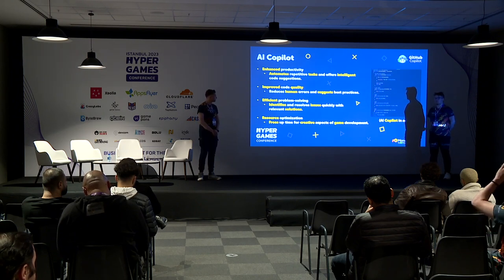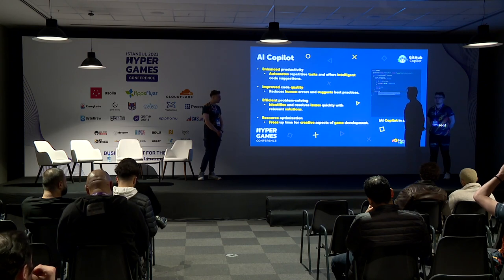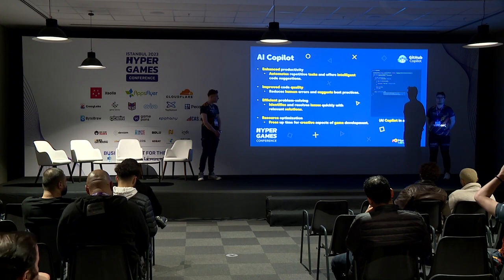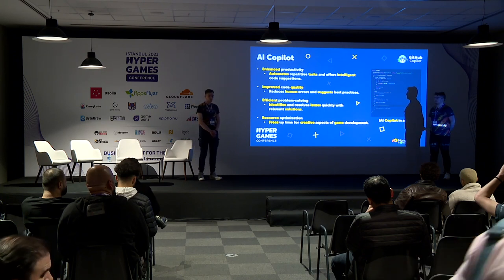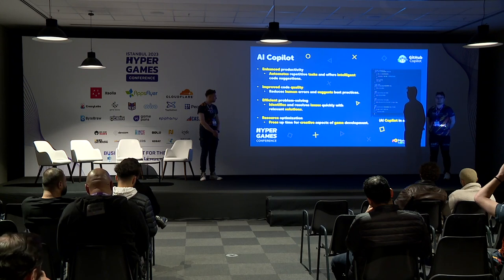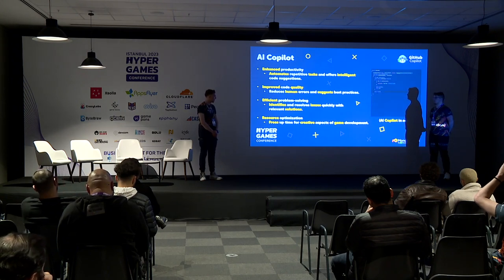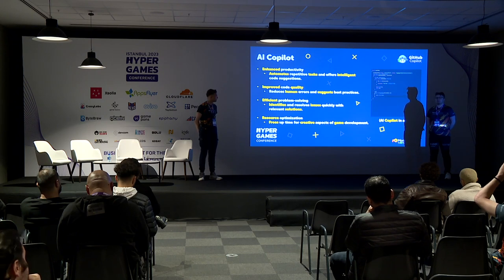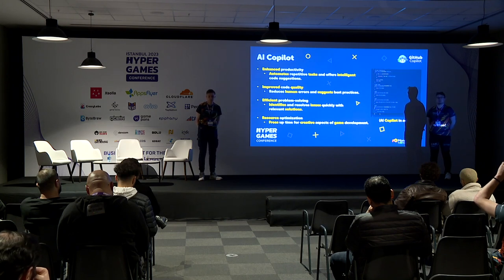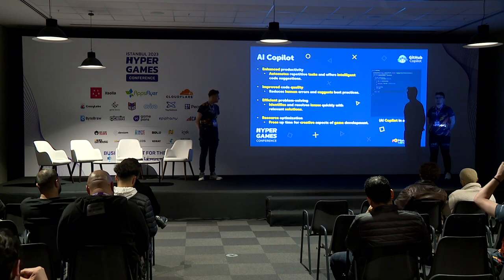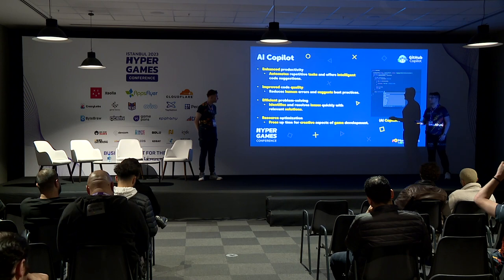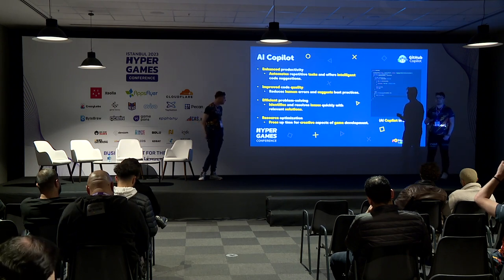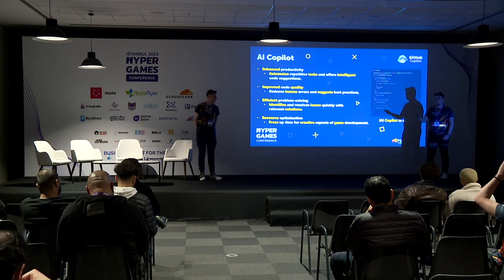About code quality: it uses the database of all code on the internet and trains on the best code found on GitHub, which is a Microsoft project with all repositories. So by default, it uses the best code practices available. For efficient problem solving, even a beginner developer who wants to create games can write a comment like 'create me a script that does X, Y, Z,' press enter, and it will generate a function that solves that. But the better approach is using your own functions and just improving them with Copilot's help.